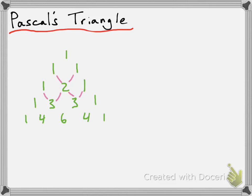I'm going to do one more row. So the next row: we start with one. One plus four is five. Four plus six is ten. Six plus four is also ten. Four plus one is five. And then the last term is going to be one. And we can keep going like this forever, but I'm just going to stop here for a moment.